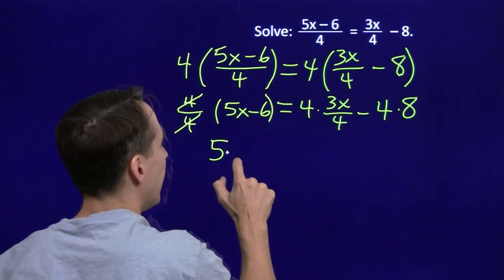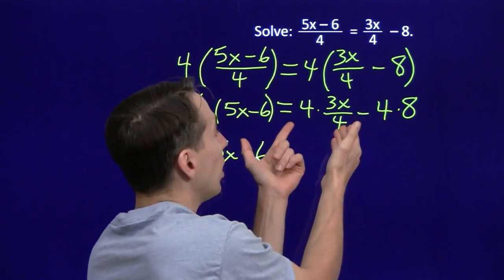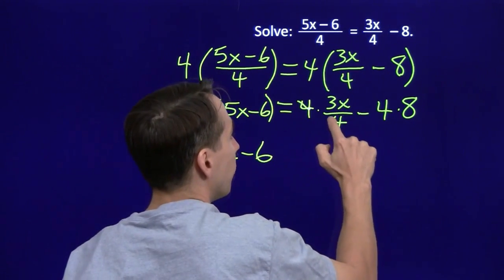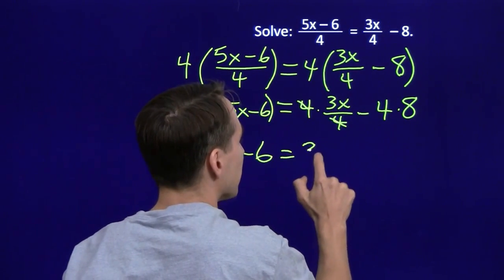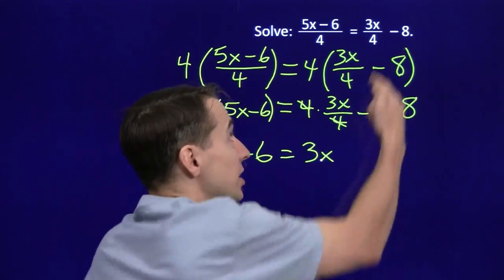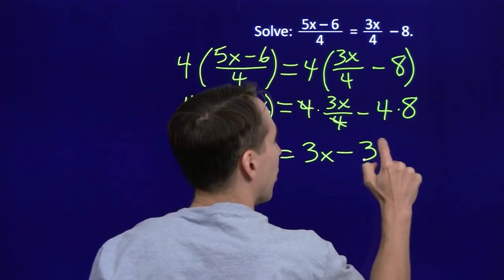And we have 5x minus 6 on the left. But over here, when we multiply it by 4, we have to multiply the fraction 3x over 4. We multiply that by 4. If the 4 is canceled, we're left with 3x. But we also have to multiply the 8 by 4, because the 8 is not up in the numerator here. We multiply that by 4, we get 32.